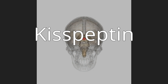Gonadotropin-releasing hormone is released from the hypothalamus to act on the anterior pituitary, triggering the release of luteinizing hormone, LH, and follicle-stimulating hormone, FSH. These gonadotropic hormones lead to sexual maturation and gametogenesis. Disrupting GPR54 signaling can cause hypogonadotrophic hypogonadism in rodents and humans.